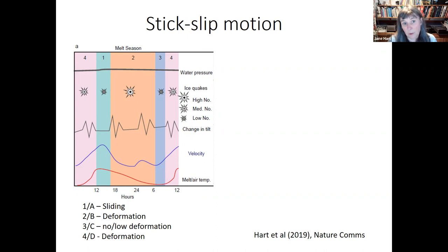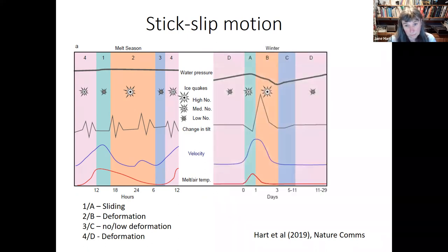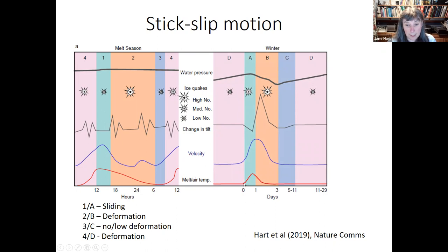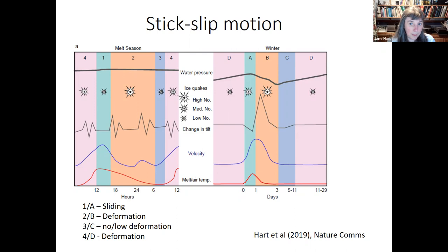In winter — and some people think not much happens in winter — we have a very similar pattern, except instead of happening every day it happens over a series of days, triggered by warm events. Every time there's a warm event when air temperature rises above zero, velocity rises and we have sliding. Then the glacier reconnects with the bed during the second phase and we have deformation. In winter there's then a third stage where very little deformation goes on at all, followed by reconnection with the bed and deformation increases again. Both summer and winter are related to bursts of meltwater coming into the system.